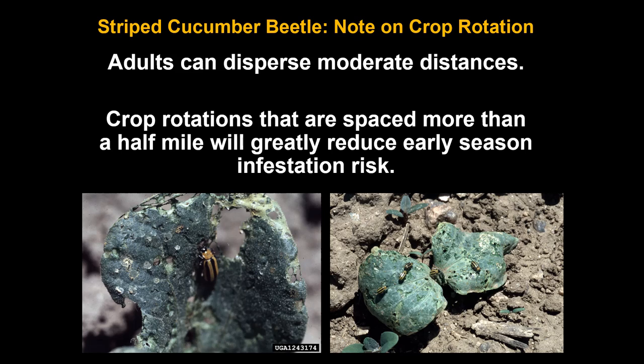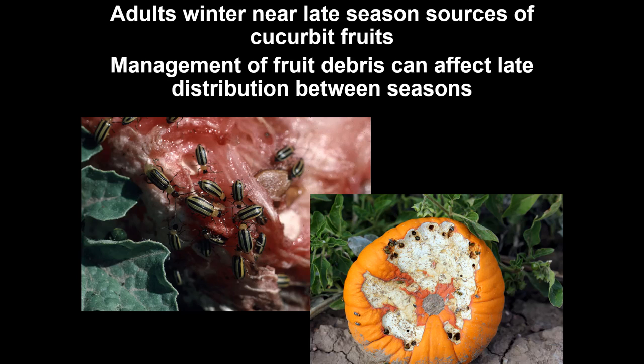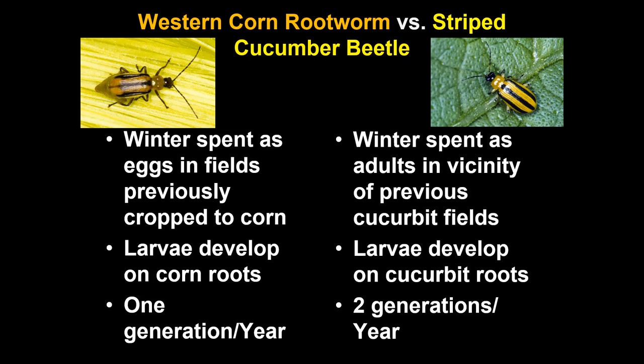Striped cucumber beetle can disperse moderate distances, so crop rotation needs to be about a half mile from a previous cucurbit planting or cull pile from the previous year. This is not an insect controlled by rotating to an adjacent field — that can work for western corn rootworm but not for striped cucumber beetle. Rotating more than a half mile will greatly reduce the risk of beetles finding the new planting. Managing fruit debris affects the distribution and numbers, so getting rid of fruit after harvest promptly and making sure it's destroyed or stored away from where you'll be planting next year is important.